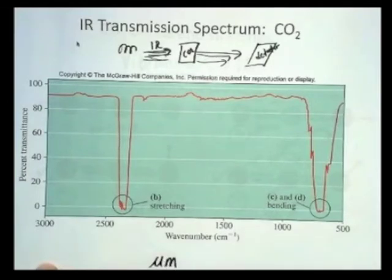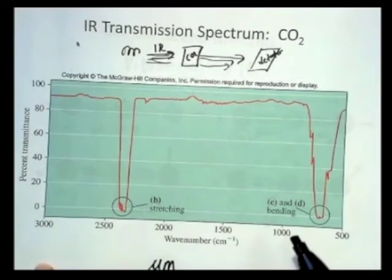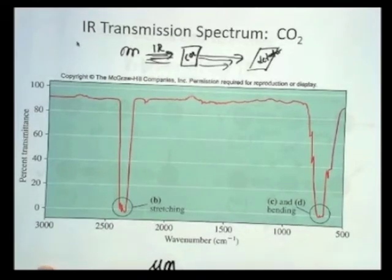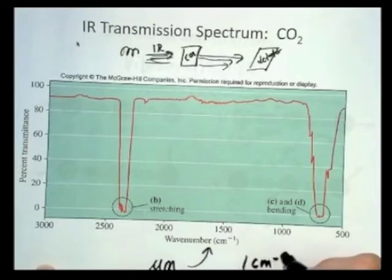But traditionally, infrared spectroscopists, the people who do this kind of work, chose to convert the micrometer wavelength unit into wave number units, which are inverse centimeters. And so the conversion, one wave number equals one over a micrometer times 10,000.